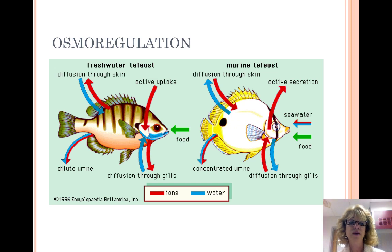An animal needs to be able to prevent excess water intake or loss. Osmoregulation is the control of water balance. For example, a freshwater fish lives in a hypotonic environment and has kidneys and gills that constantly work to prevent excess water from building up. It is the opposite in a saltwater fish, who lives in a hypertonic environment and the kidneys work to retain water.